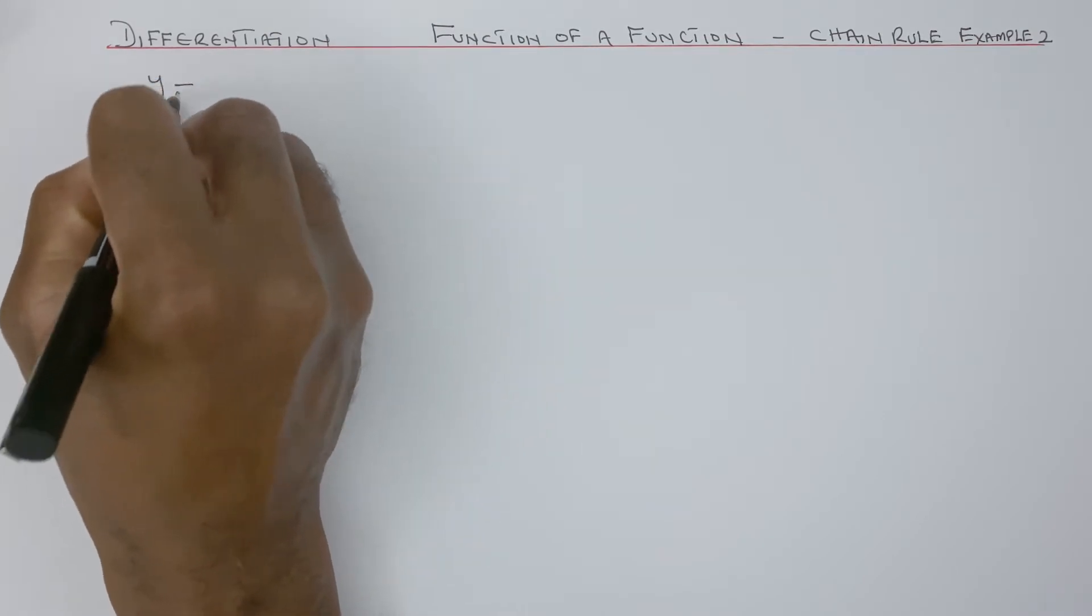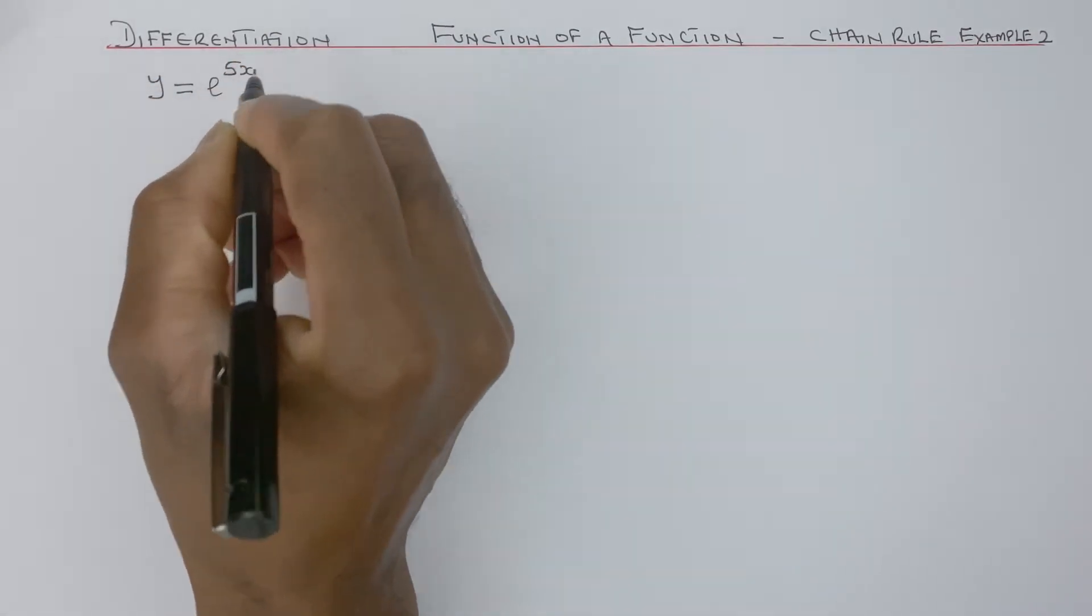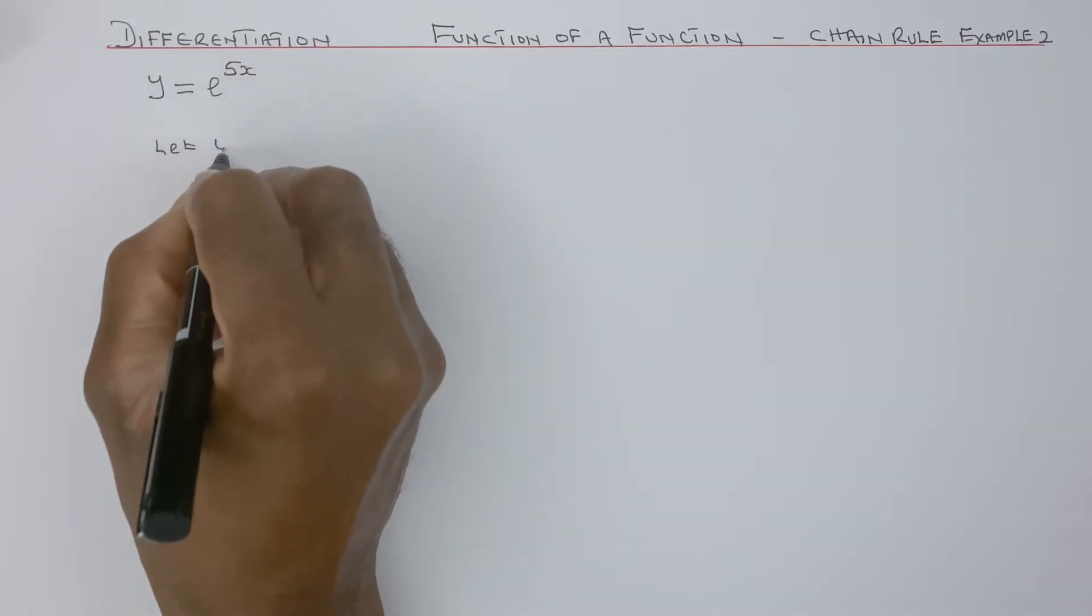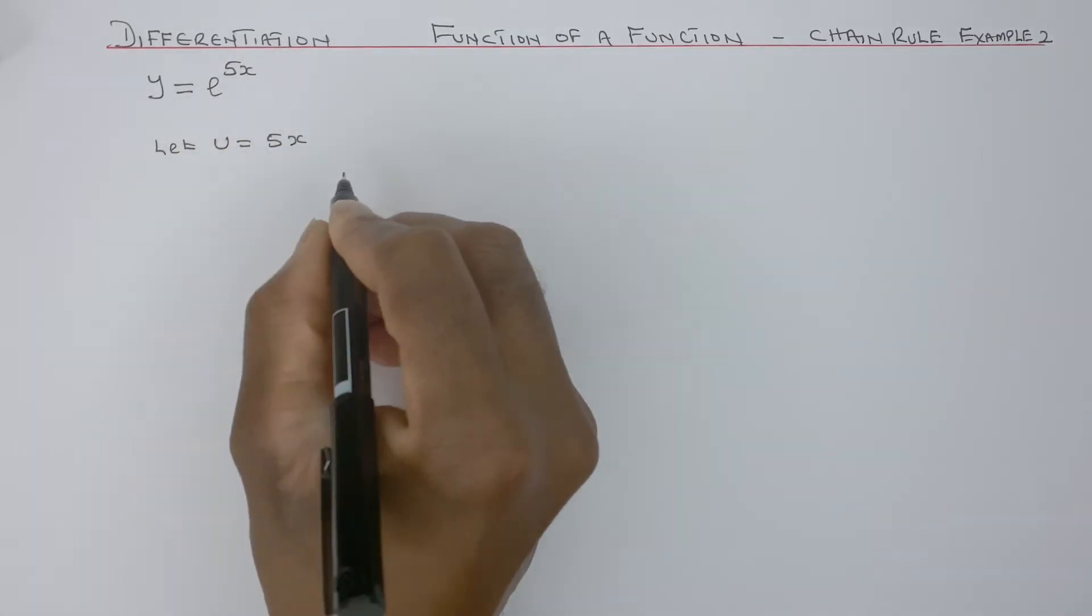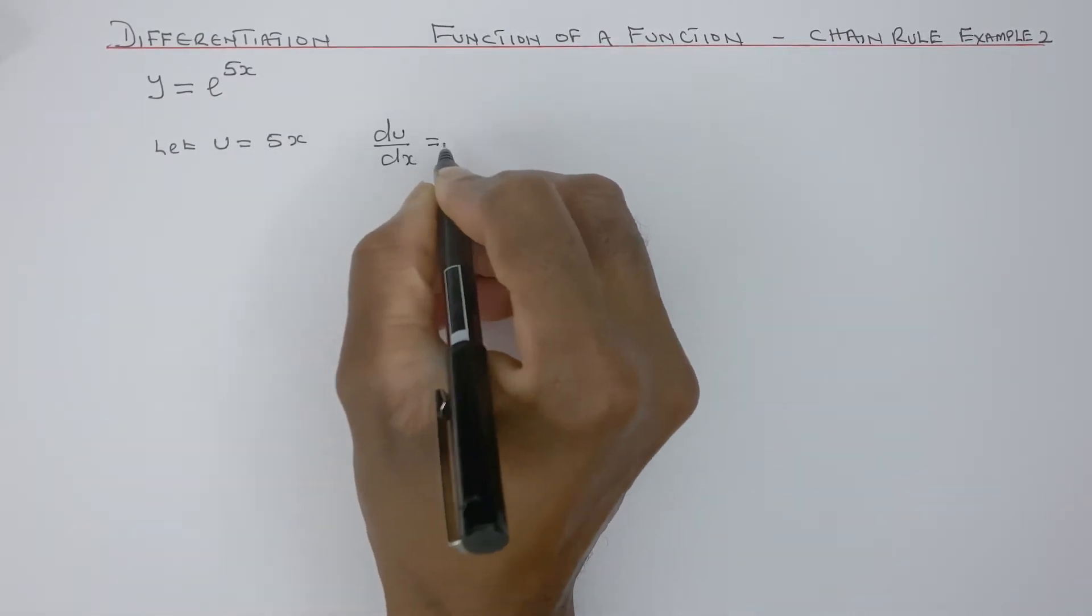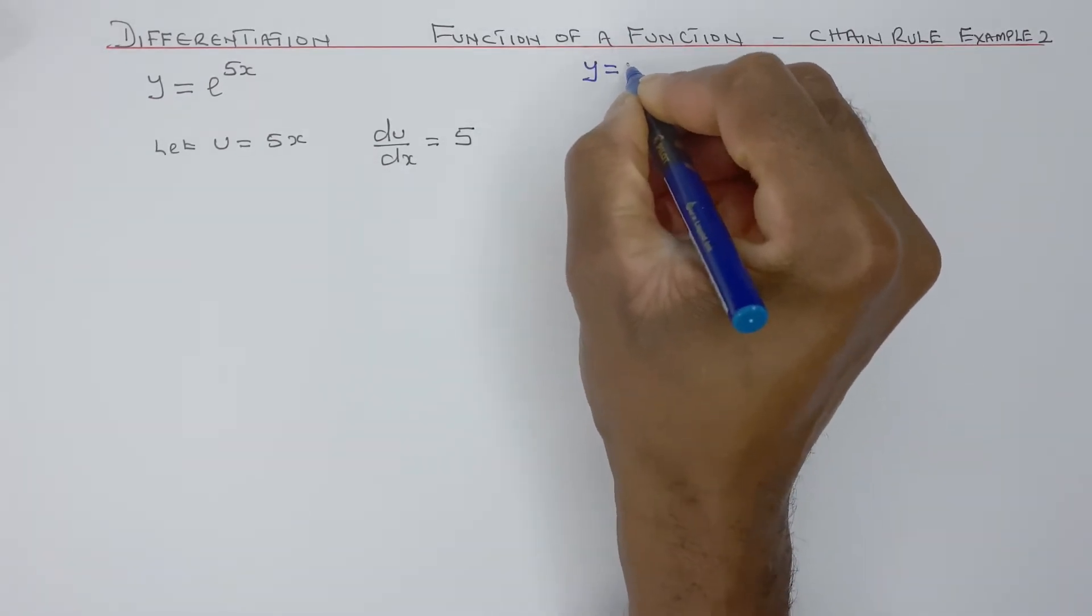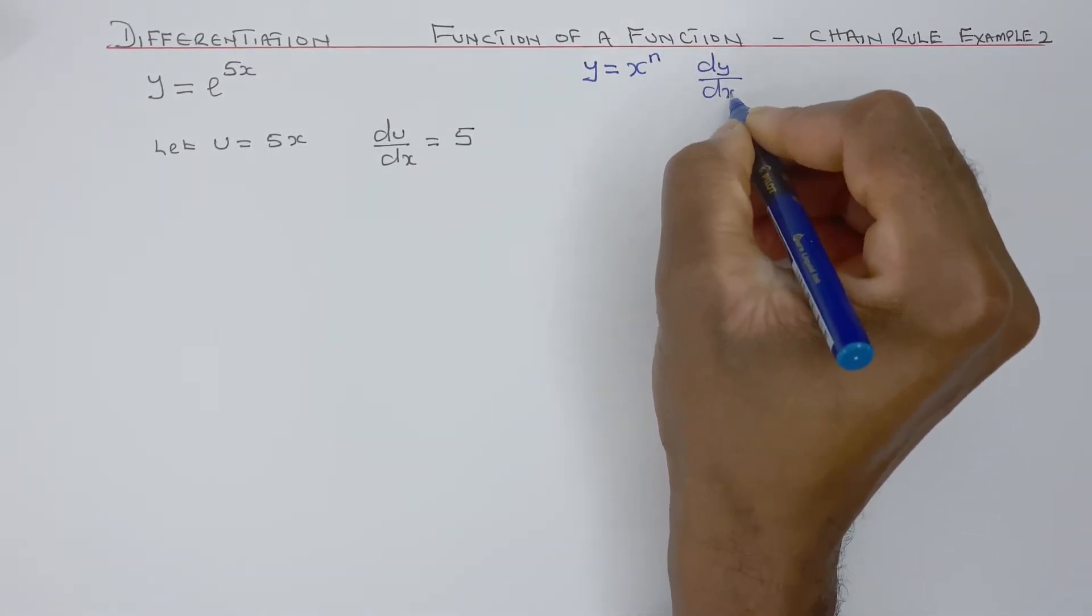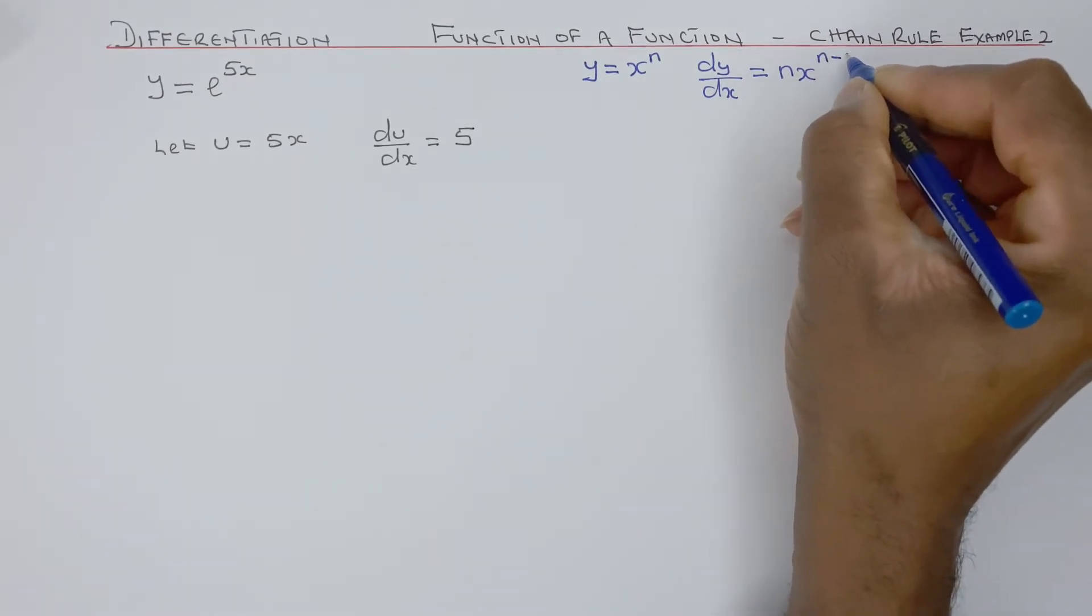If you have y equals e to the power of 5x and you want to find dy/dx, you can say let u equals 5x. Then we have du/dx equals 5. If y equals x to the power of n, then dy/dx equals n times x to the power of n minus 1.